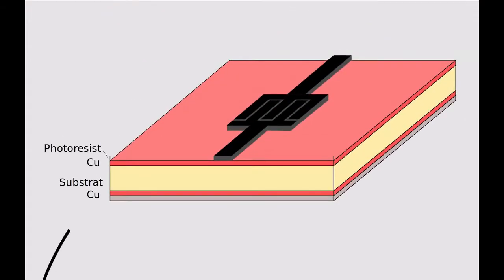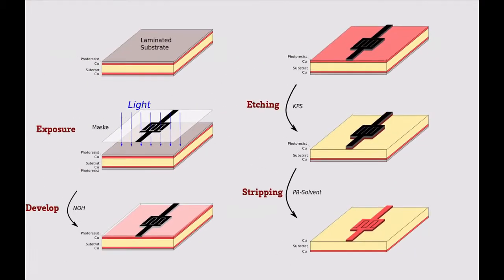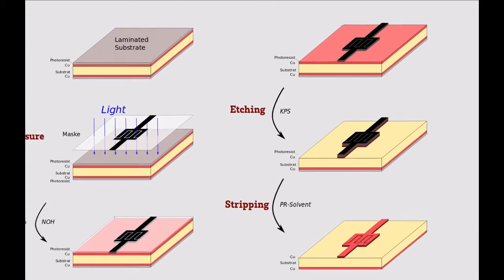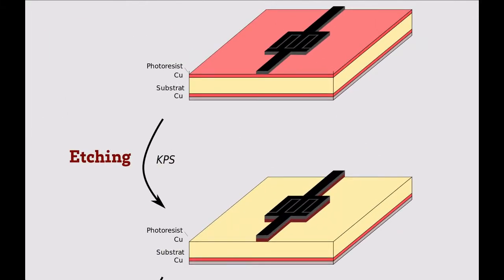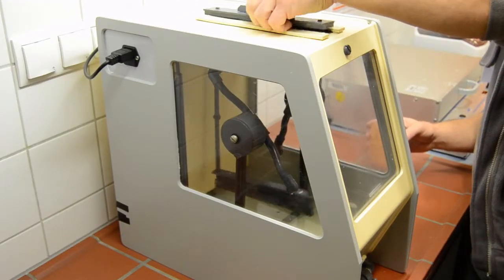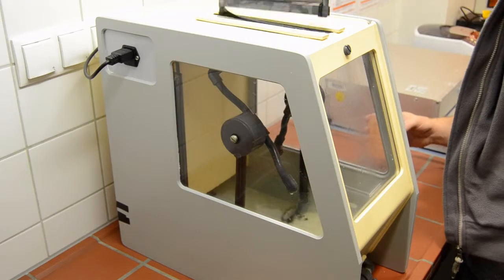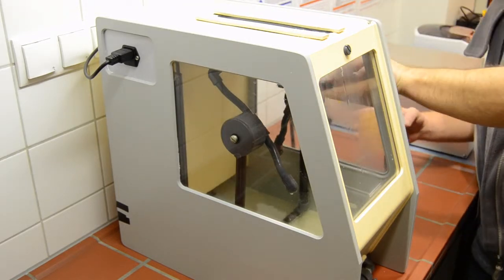Once the extra photoresist is removed we can step forward to the actual etching of the circuit. The etching removes all of the copper which is not covered by photoresist. We place the board inside the etching machine.